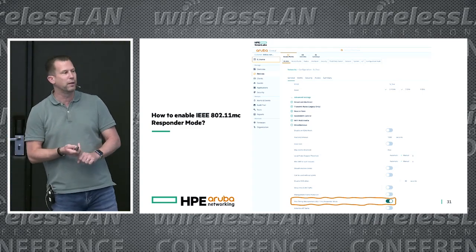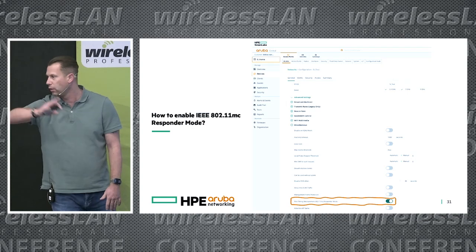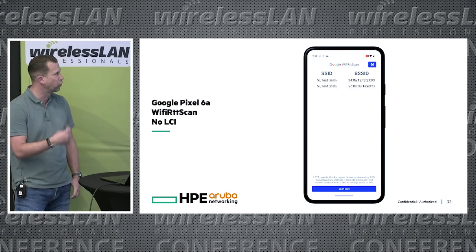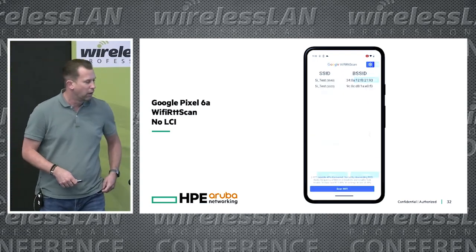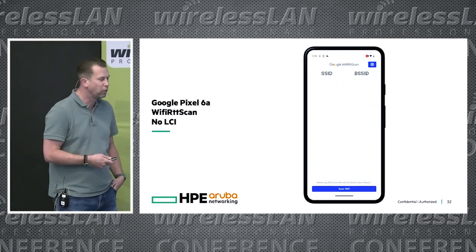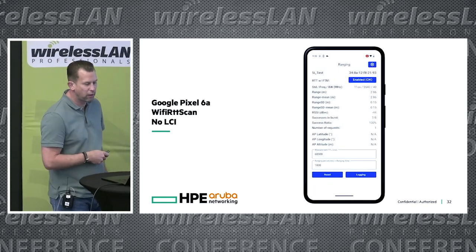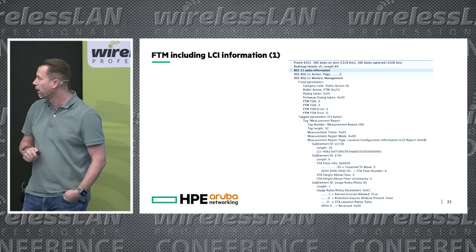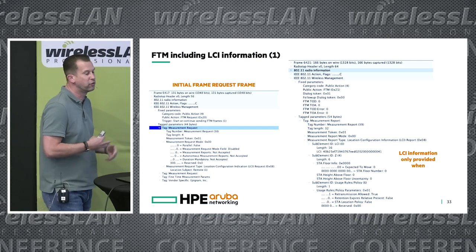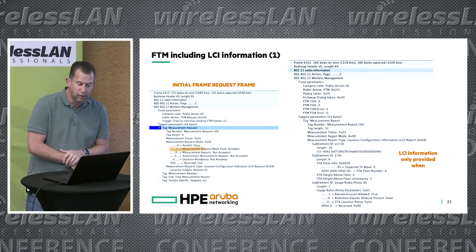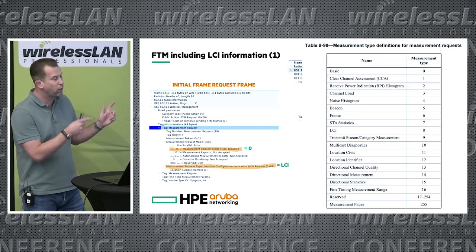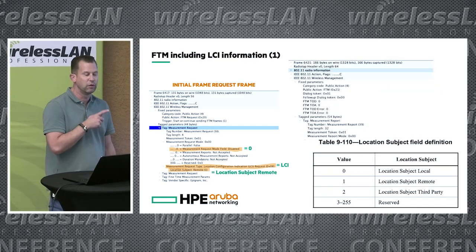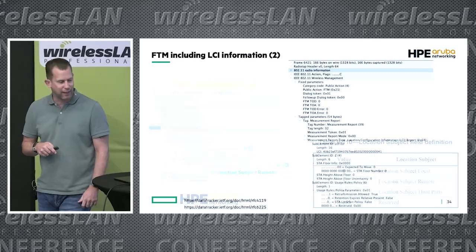On Aruba, you can enable FTM like this. Using the Wi-Fi RTT scan from Google, you can see ranging information in the results. There is no LCI information in this example. For LCI, it is only provided when requested in the initial request frame — with the appropriate field set to zero and LCI set — and the LCI field should be set to 'remote' to start receiving LCI information.